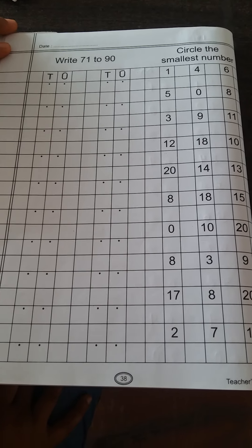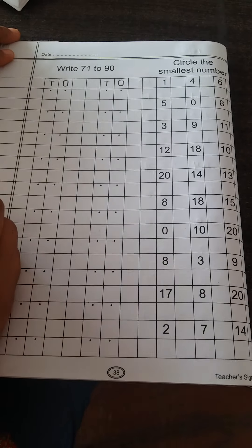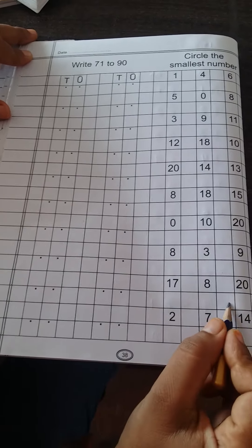Good morning students. How are you? Today I will explain about counting 71 to 90 and circle the smallest number.